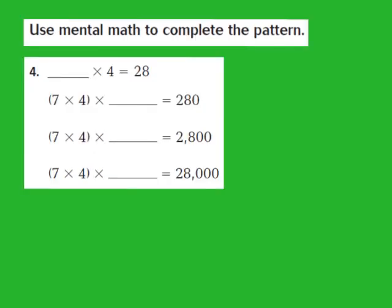Now let's check out question number 4. Our job is to use mental math to complete the pattern, but question 4 looks a little different — this time we're missing the first factor. We have blank times 4 equals 28. From my knowledge of multiplication facts, I know that 7 times 4 gives me 28. So 7 times 4 equals 28 is my basic fact.